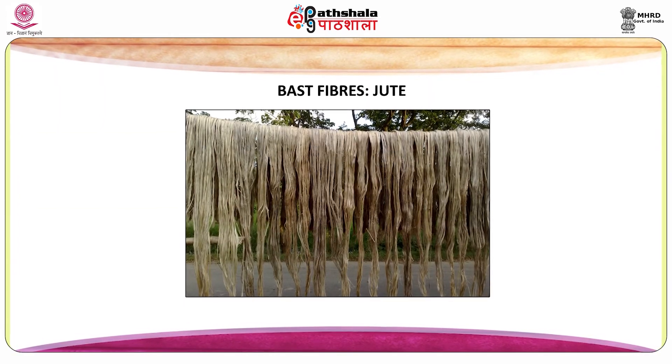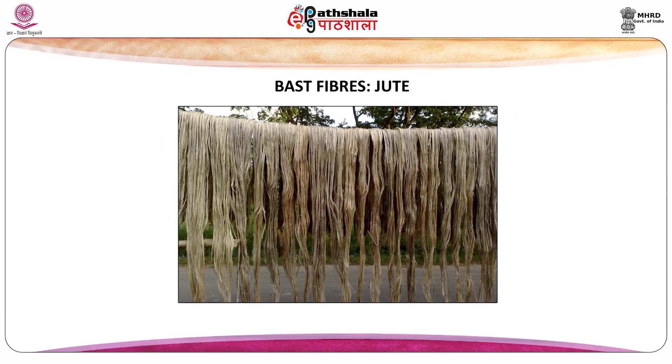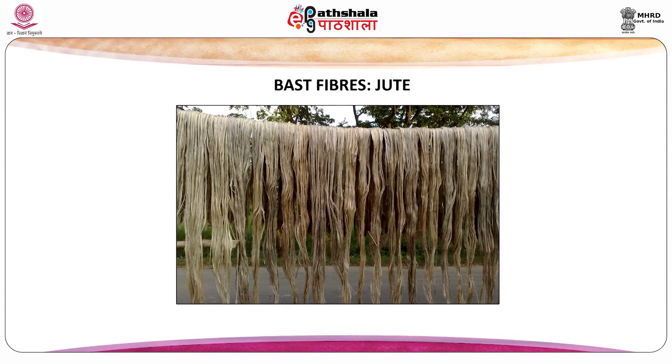Uses: linen is used for apparels, home and commercial furnishing items and industrial products. Next is bast fiber: jute. Jute is one of the cheapest natural fibers and is second only to cotton in amount of production and variety of uses. It falls into the bast fiber category. The plants are usually harvested after they flower but before the flowers go to seed.